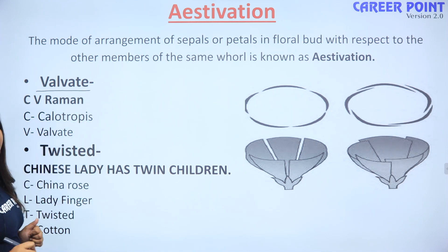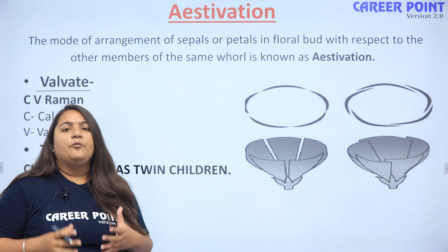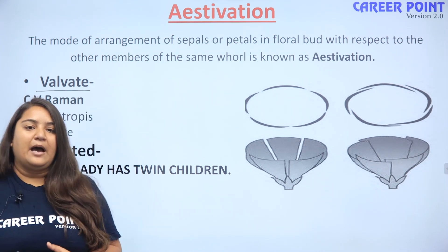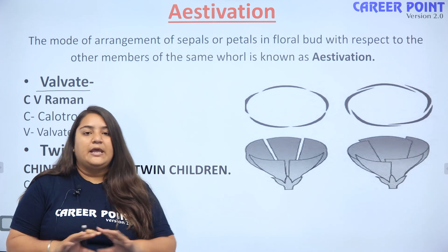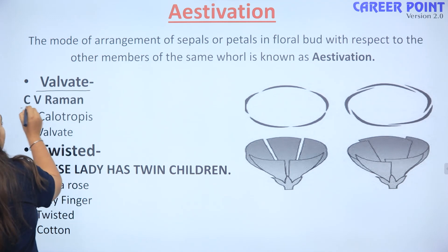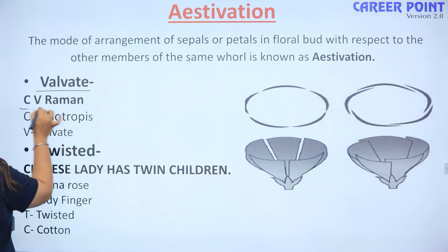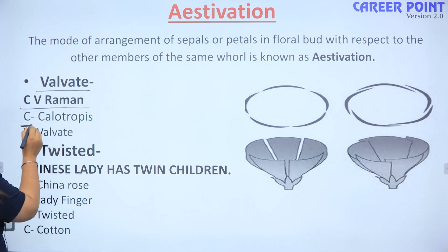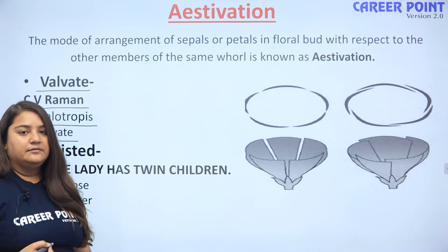Sabse pehli jo estivation hoti hai usko hum bolte hain valvate. Valvate ko hum kaise yaad rakhenge? Very popular name — CV Raman. It is a very popular name. Isko yaad rakhenge CV Raman se. CV Raman ke initials lenge. C se kya hoa? Calotropis. V se kya hoa? Valvate. Thik hai? C se Calotropis, V se Valvate.